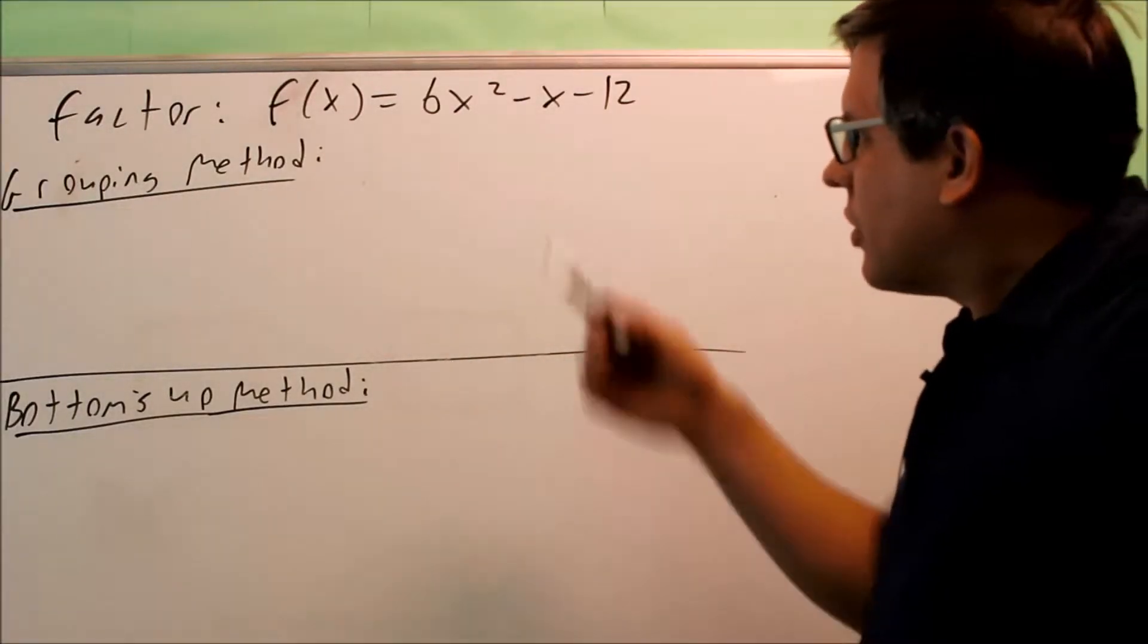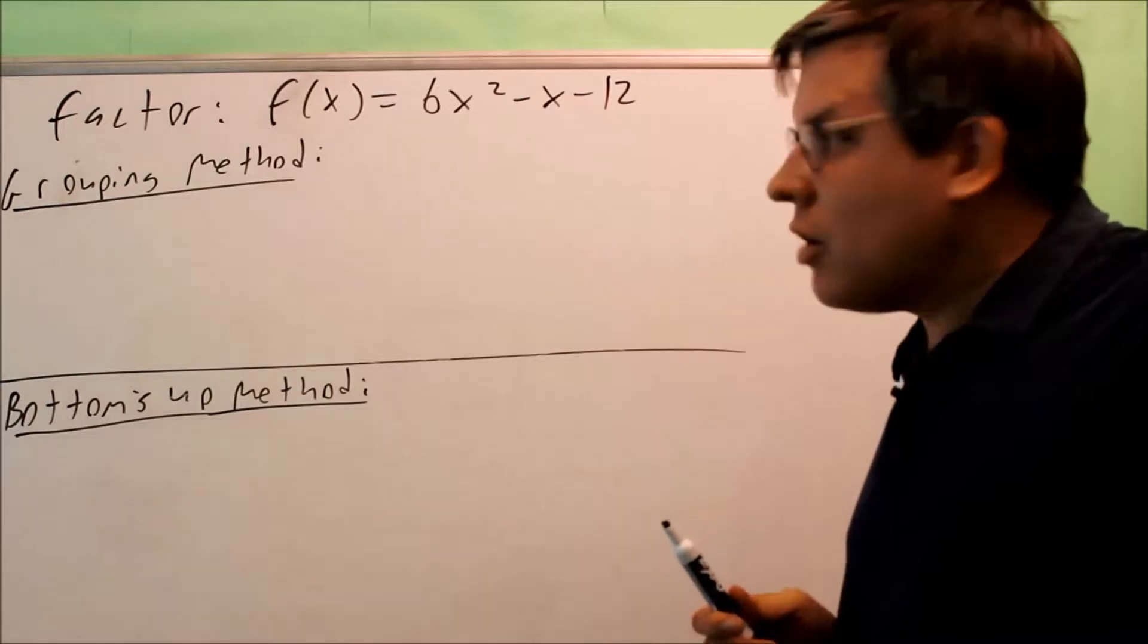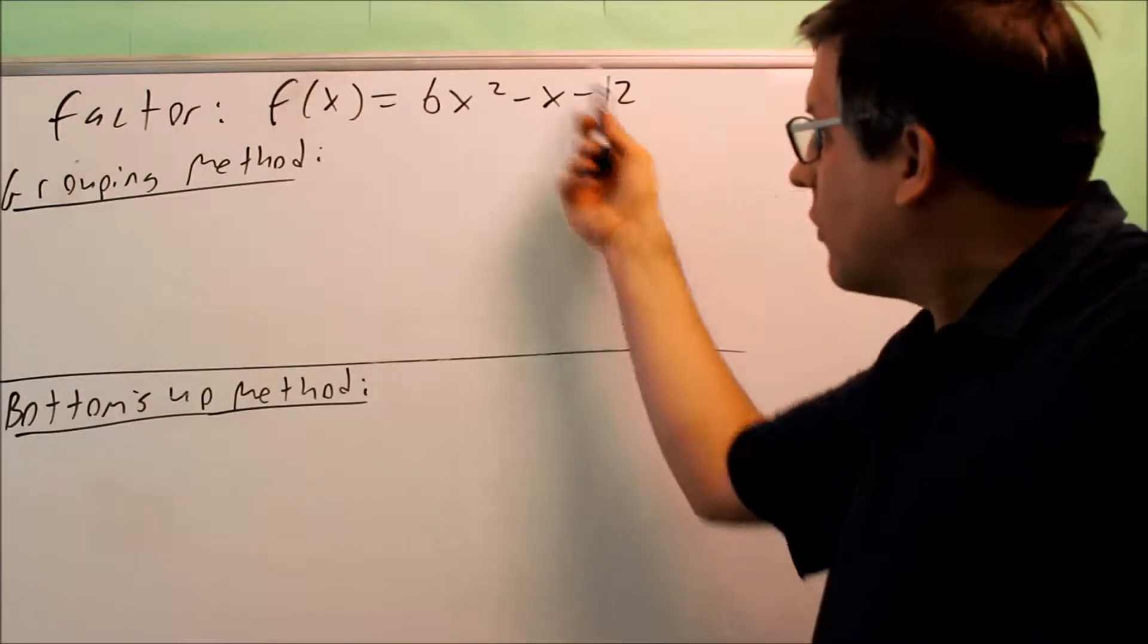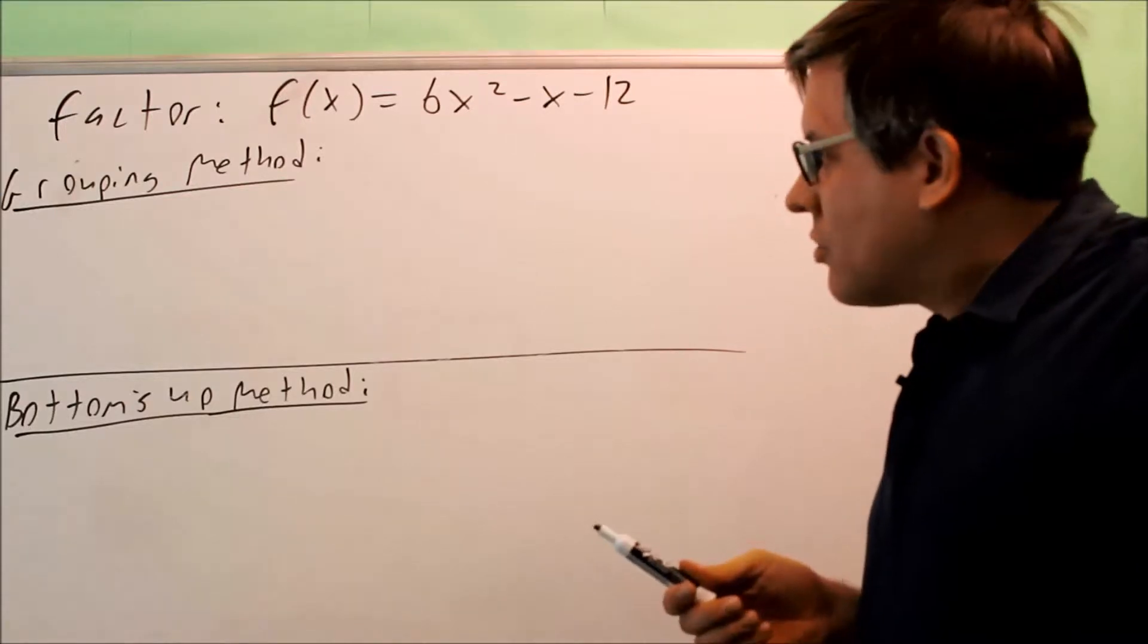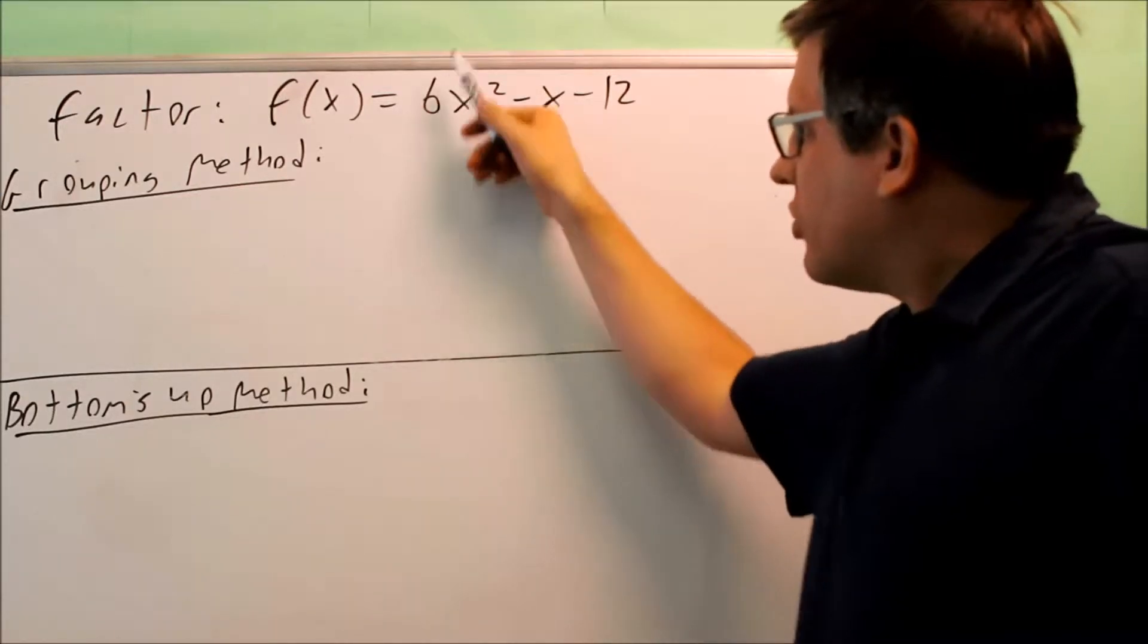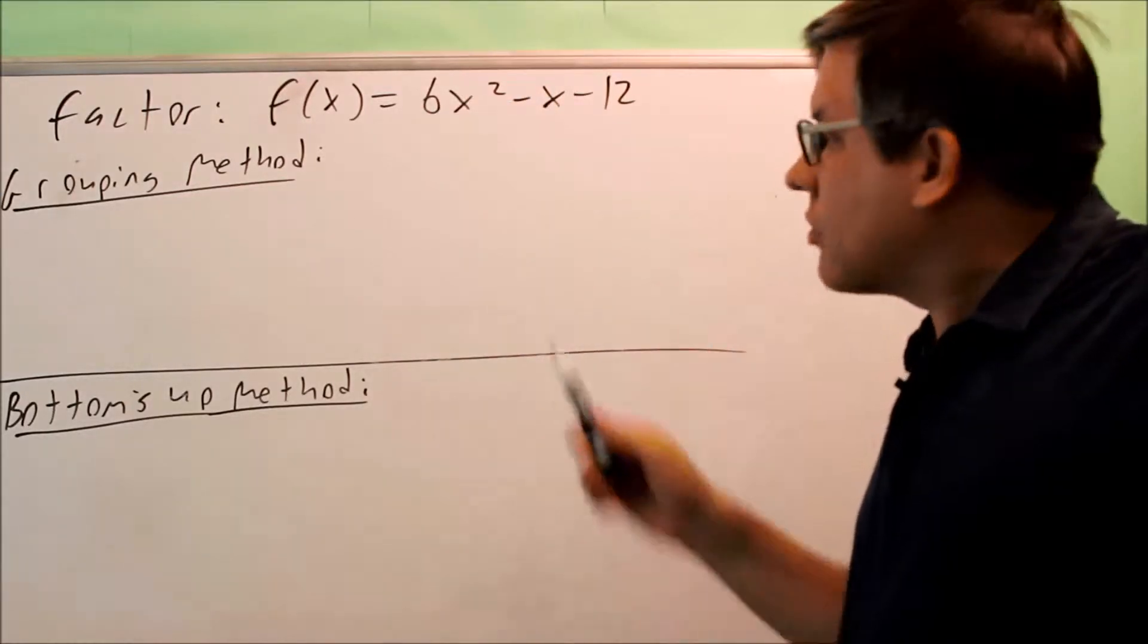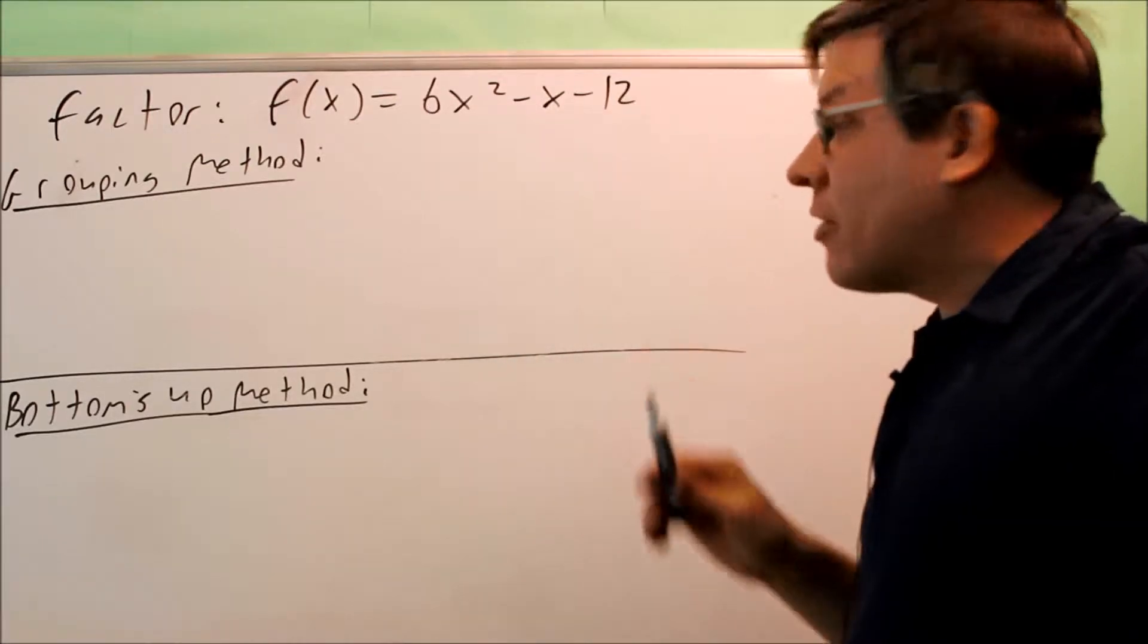This is the next one that we want to factor. It doesn't say find x-intercept at all, it just says factor only, so all we have to find out is what two things multiply to make this. So this particular problem, there's not a 1 in front of the x squared, and also there's not any common factors in this one either.